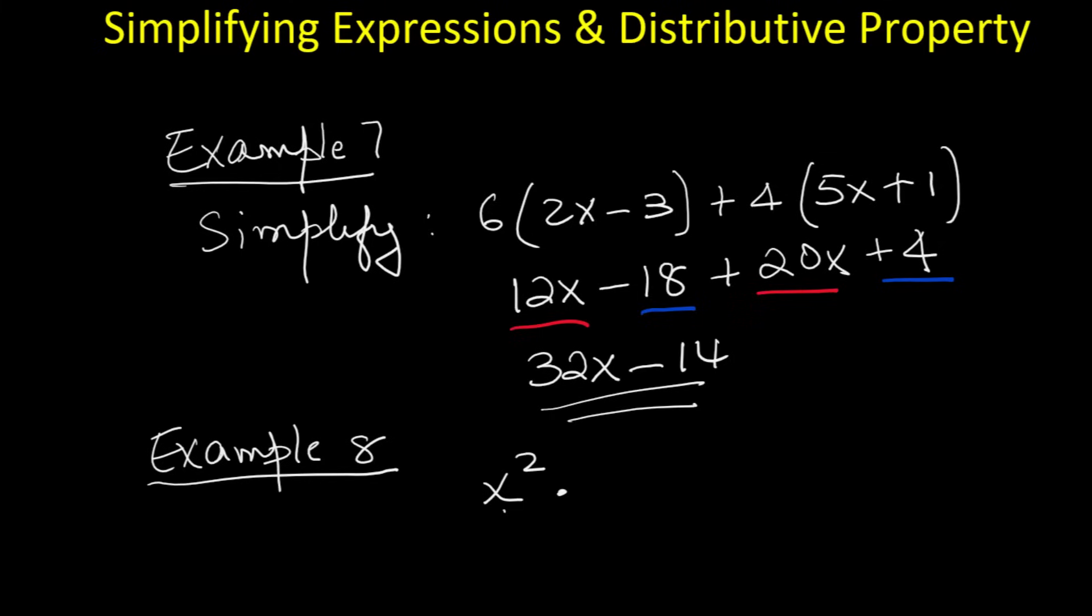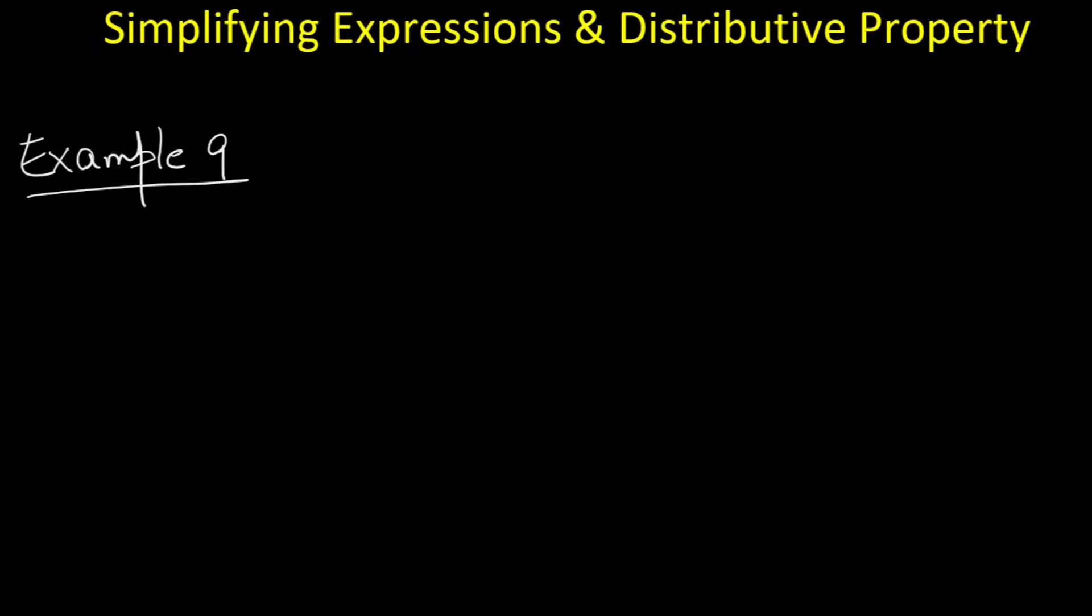If we have x squared times x cubed, the rule is simple. When multiplying variables with the same base, we add the exponents. 2 plus 3 is 5. So the answer is x to the fifth power.